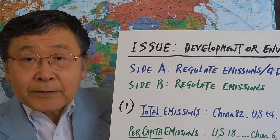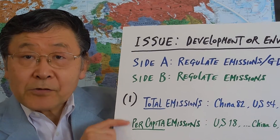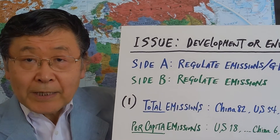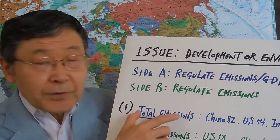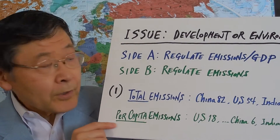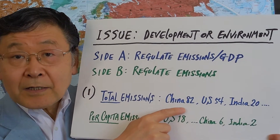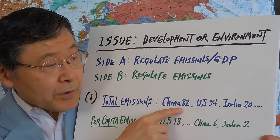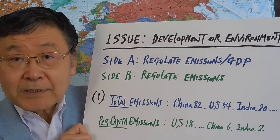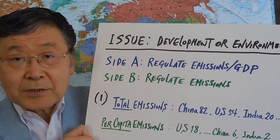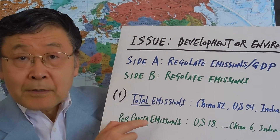Which target to adopt depends on what kind of data or statistics you are looking at. First, total emissions versus per-capita emissions. When you look at total emissions for each country, China is of course the number one polluter, surpassing the United States, and India is third. So China, US, and India are the three major polluters in that order.